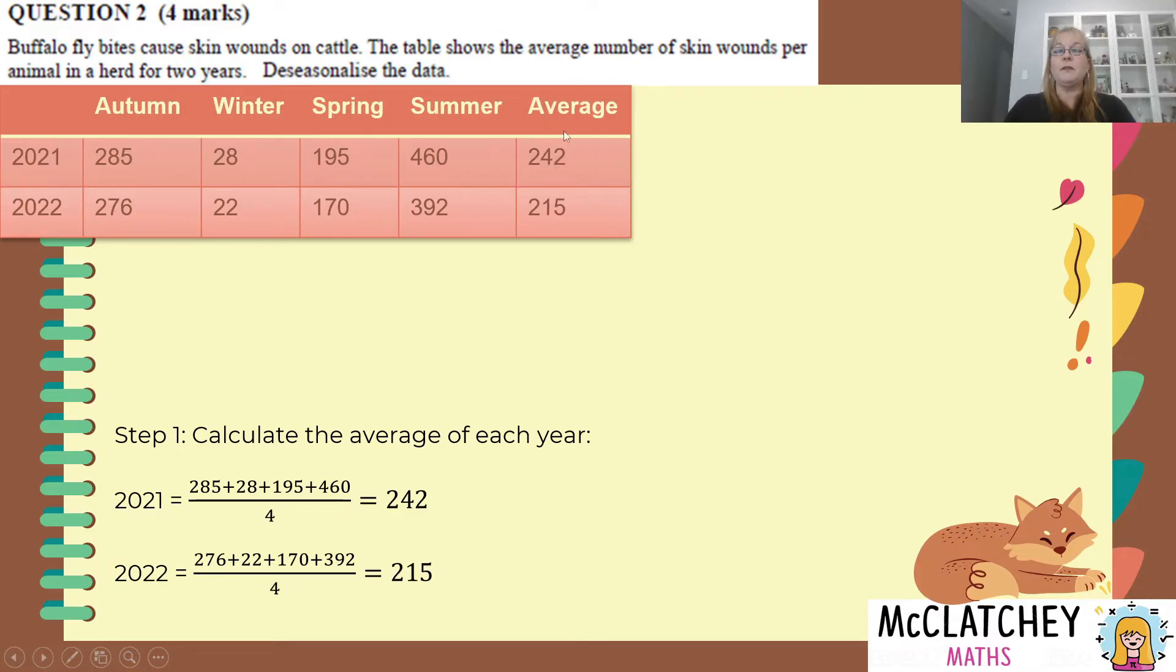And we're just going to pop those in a new column on the end of the table to show the average. And we've achieved our first of four marks for correctly determining the average of each year. Okay so we're a quarter of the way there.